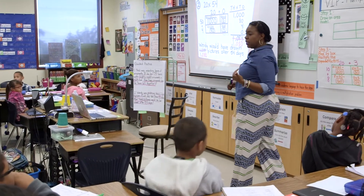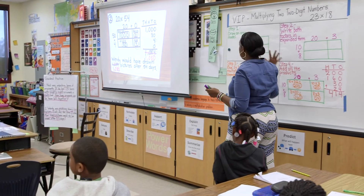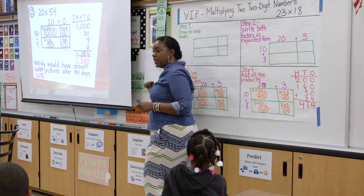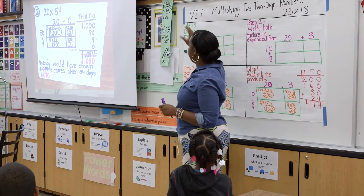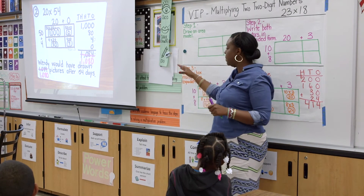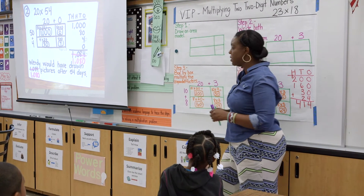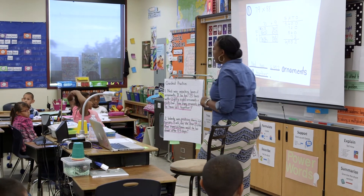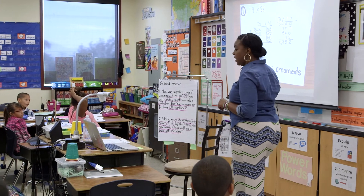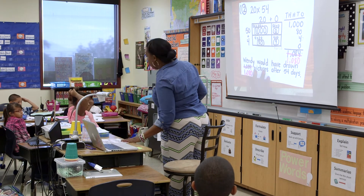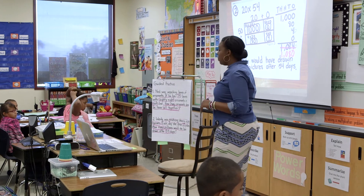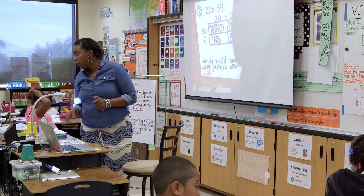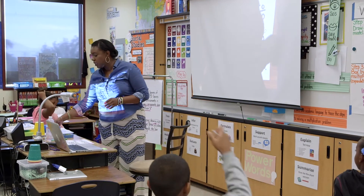Today we used academic vocabulary to build our VIP. We used a see, say, do method where you were able to see me do it, you taught it to your classmate, and then you wrote your notes. Then we went over two word problems — the first one we did all together, and the second one you found my mistake while doing it the correct way. And now I can roll out independent practice.